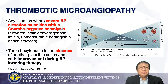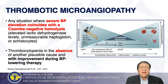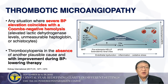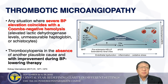Thrombotic microangiopathy is a situation where severe BP elevation coincides with Coombs-negative hemolysis, wherein you can have elevated LDH levels, unmeasurable haptoglobins, and schistocytes — RBCs that are damaged. Thrombocytopenia occurs in the absence of another plausible cause and with improvement during BP-lowering therapy.